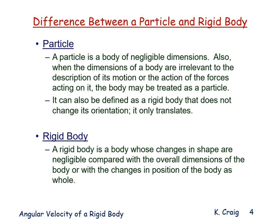What is the difference between a particle and a rigid body? A particle is a body of negligible dimensions — it's very small. Also, when the dimensions of a body are irrelevant to the description of its motion or the action of the forces acting on it, the body may be treated as a particle, no matter how large it is. It can also be defined as a rigid body that does not change its orientation — it only translates. The techniques for studying particle motion in 2D and 3D are the same when studying a rigid body in rectilinear or curvilinear translation.